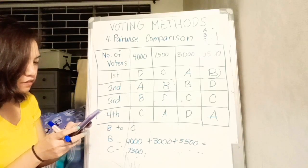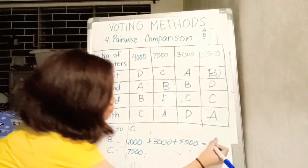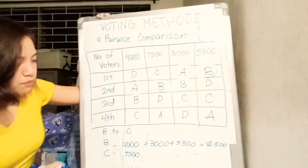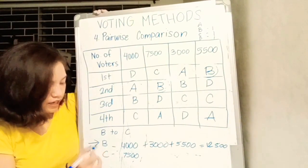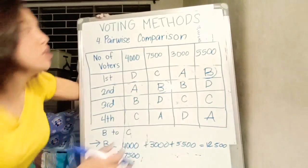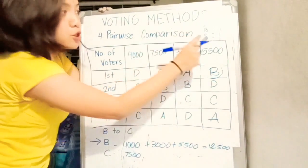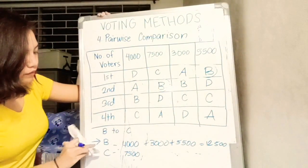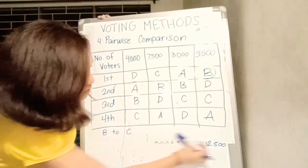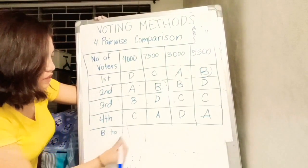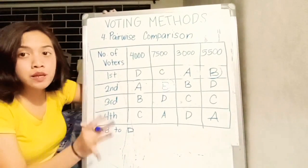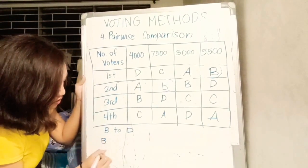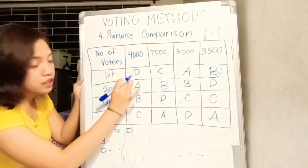Obviously, mas mataas yung voters na may gusto for candidate B. In this pairwise comparison, candidate B wins the competition. We award another point for candidate B, so meron na siyang 2 points. C has 1, D has 1, and letter A has no point yet. Next, B to D.